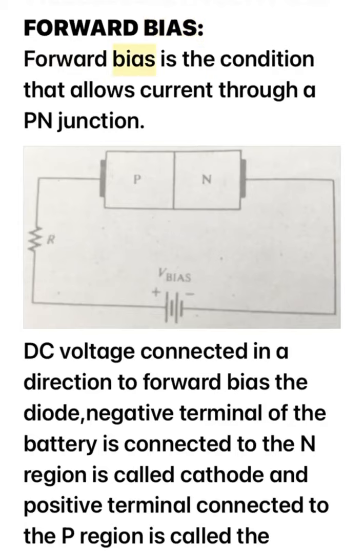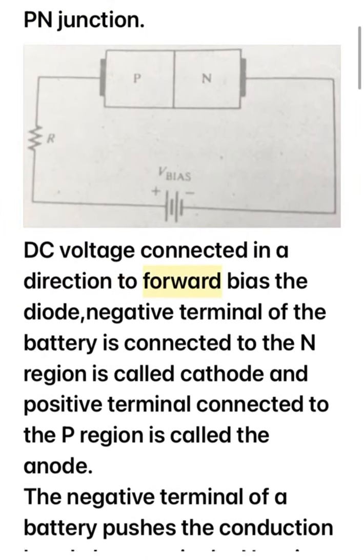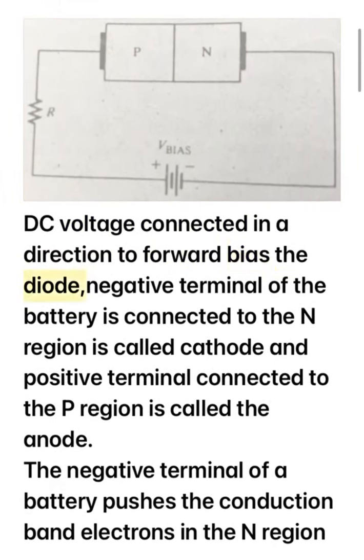Forward bias is the condition that allows current through a P-N junction. DC voltage is connected in a direction to forward bias the diode.